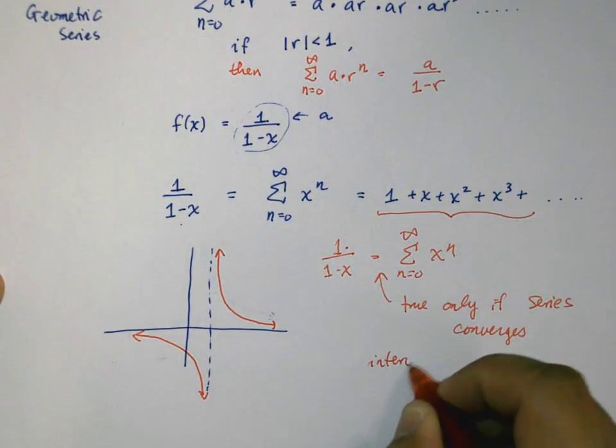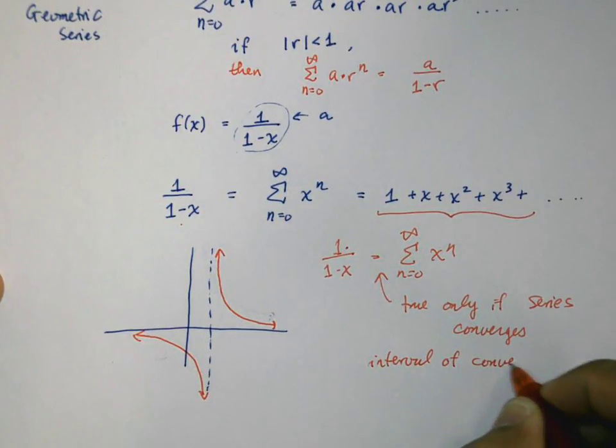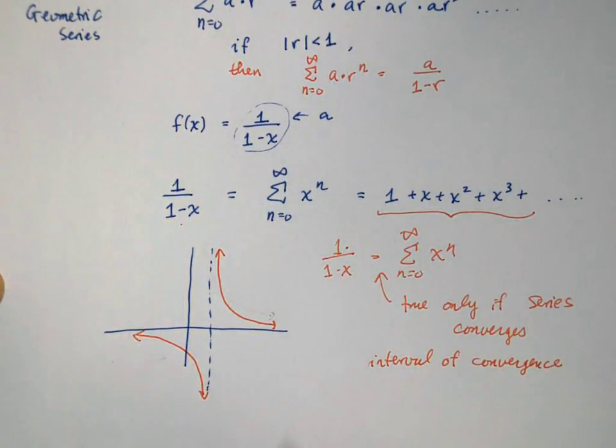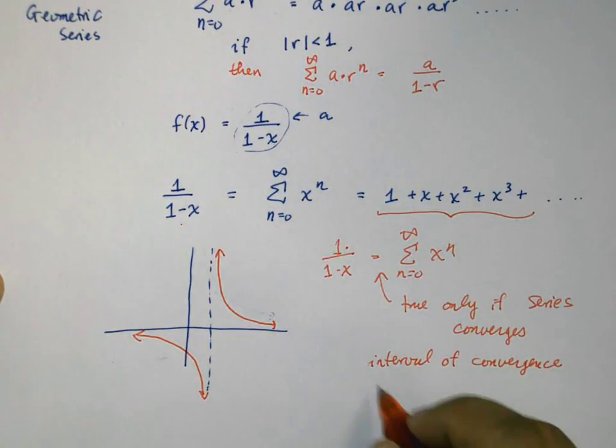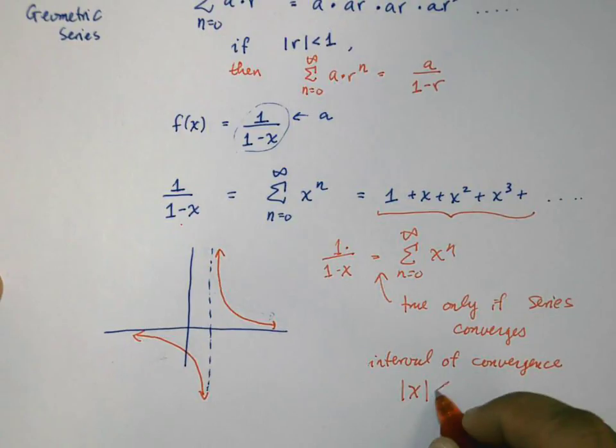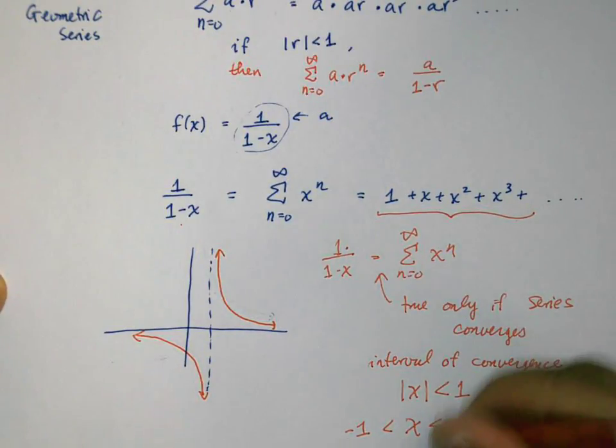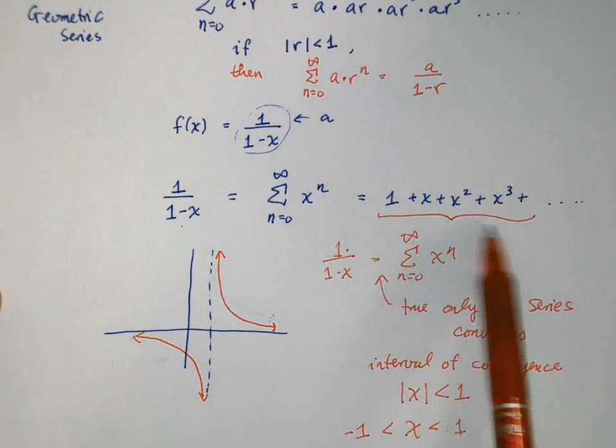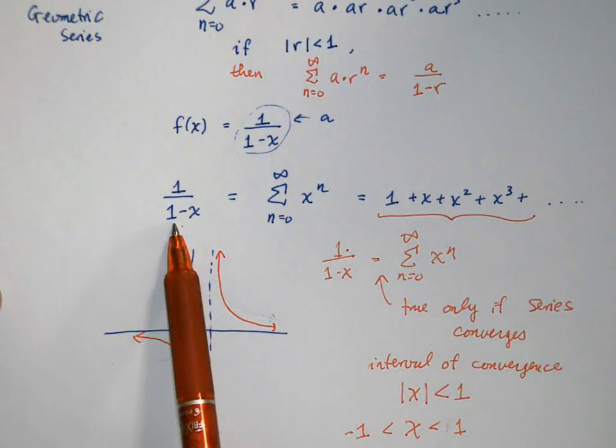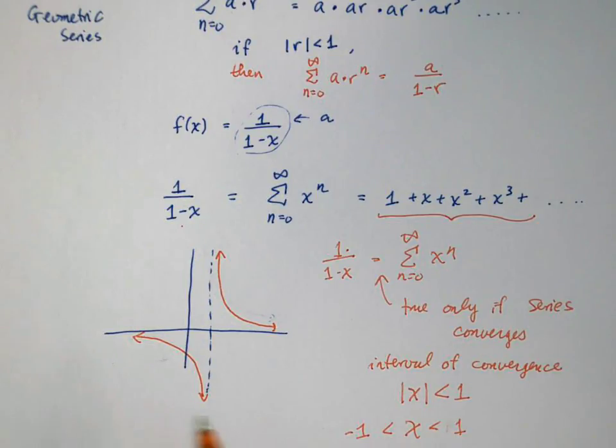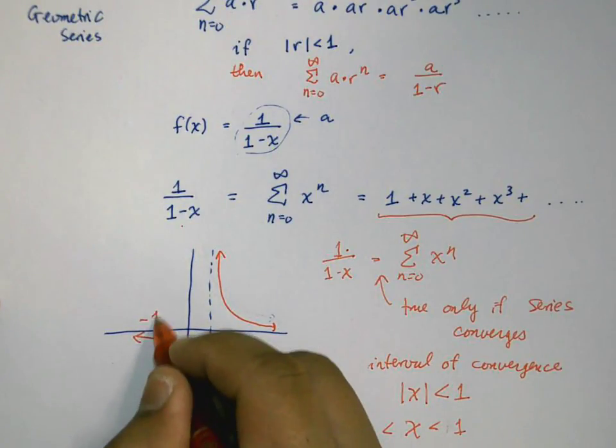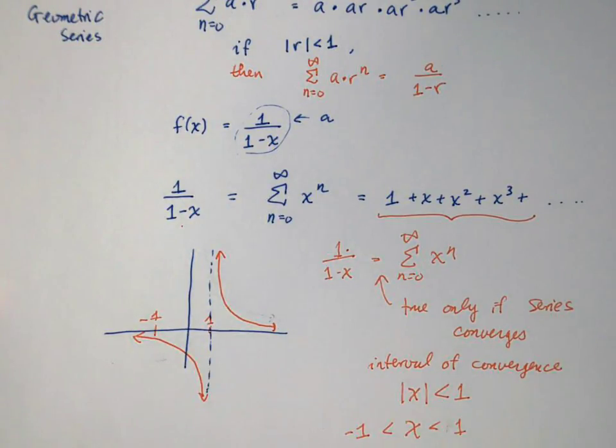We already know that this will only converge—the interval of convergence—when the absolute value of x is less than one. In other words, when x is between negative one and positive one, then we can say that the infinitely long polynomial and this function 1/(1-x) is the same. That's only true for this very small interval between negative one and positive one.